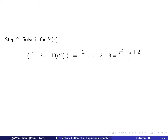Doing that manipulation, all the terms involving Y(s) stay on the left. We collect Y as a common factor, giving us s squared minus 3s minus 10. The right-hand side is 2 over s — from g equals 2 — and then s plus 2, and then s plus 2 minus 3, coming from the initial conditions. We manipulate and write it as a fraction: s squared minus s plus 2 all over s.